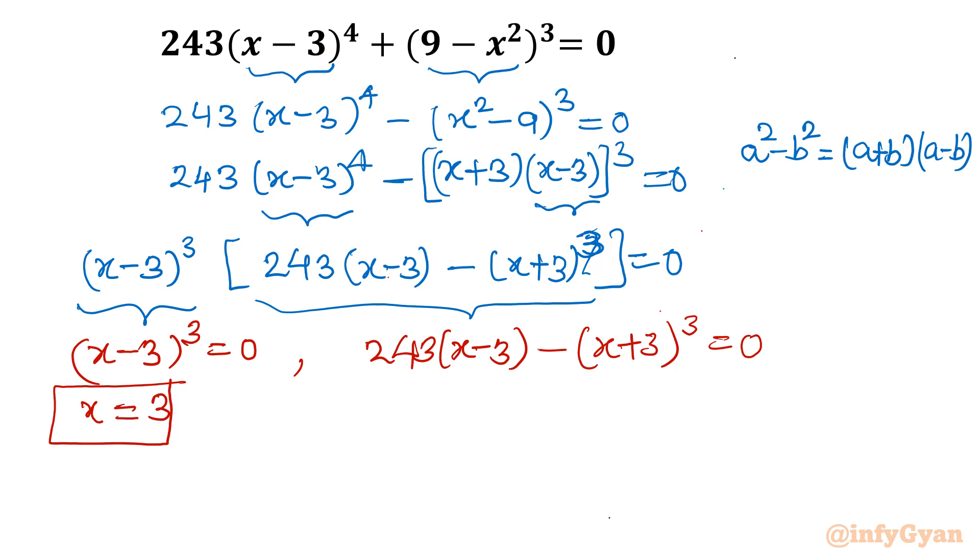So I will give a substitution here. I will write let x plus 3 equal to t. So x minus 3 is also required. So take away 6 from both sides. So x minus 3 will become t minus 6. Now let us put that there. So 243(t-6) minus t³ equal to 0. This equation will be converted in this way.